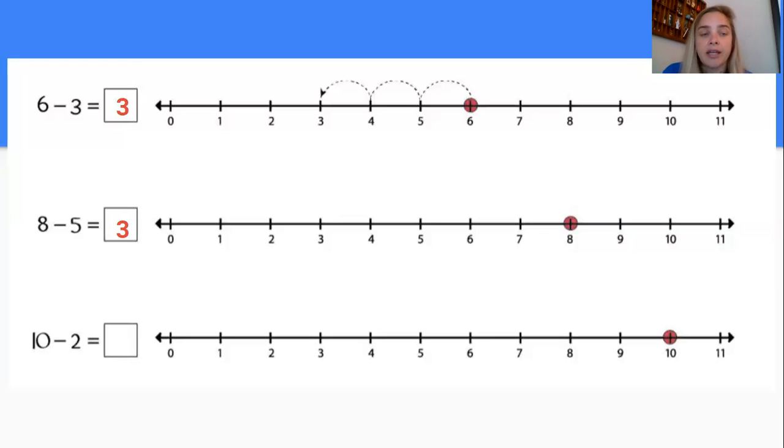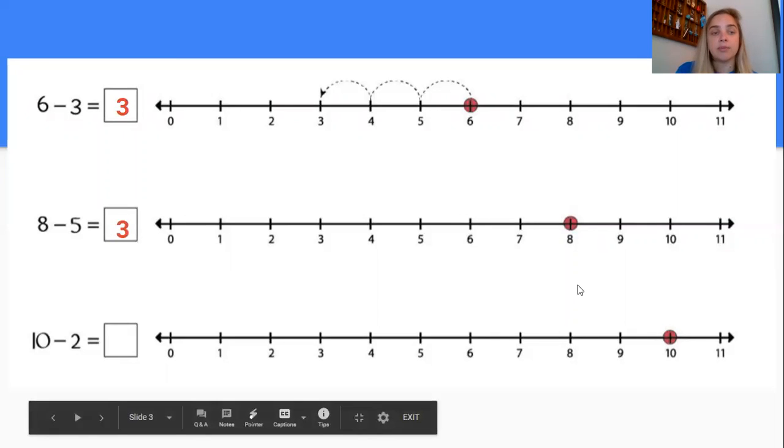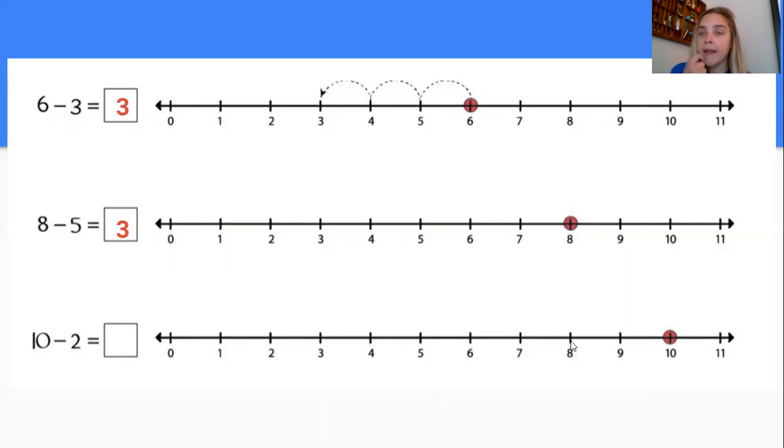All right let's see our next problem says 10 take away or minus two equals. So once again with subtraction we start with that bigger number. So I'm going to circle that bigger number I'm starting with. I'm going to take two away. So I'm going to hop one two down my number line and I land on that's right the number eight.